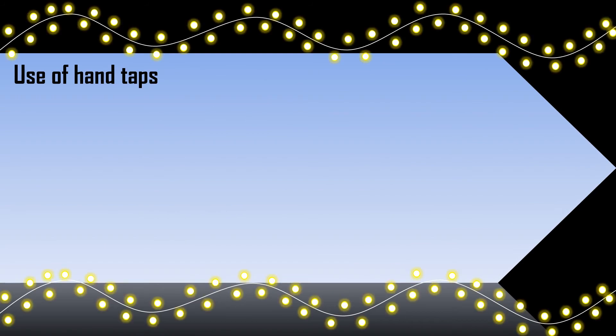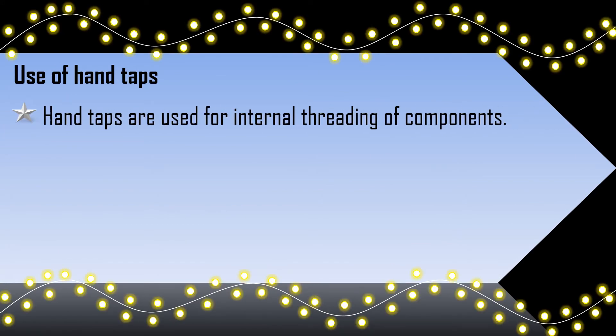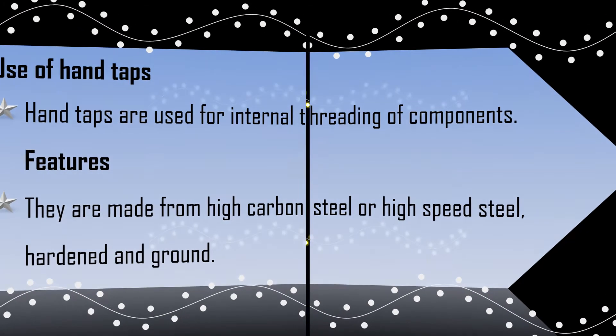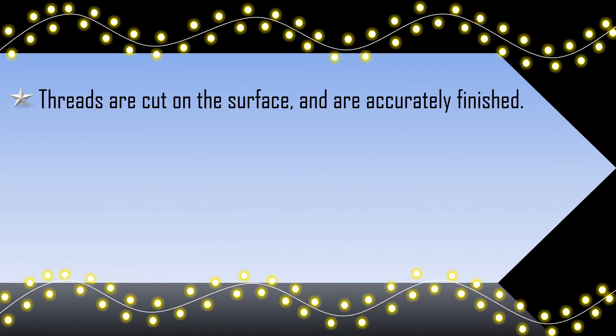First of all, let's see the use of hand taps. Hand taps are used for internal threading of components. Features: They are made from high carbon steel or high speed steel, hardened and ground. Threads are cut on the surface and are accurately finished.